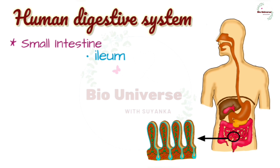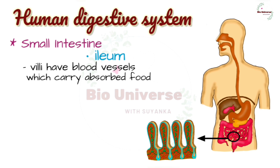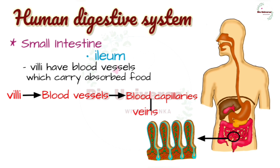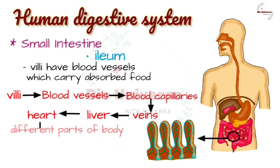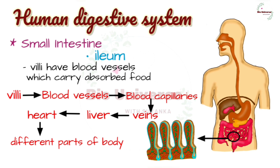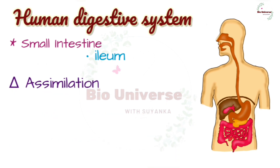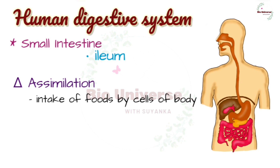Absorption of completely digested food takes place in the ileum. The wall of the ileum has finger-like projections called villi that increase the surface area for the absorption of food. The villi are richly supplied with blood vessels to carry the absorbed food. From the blood capillaries, absorbed materials are transported by veins to the liver and then to the heart for distribution to different parts of the body.